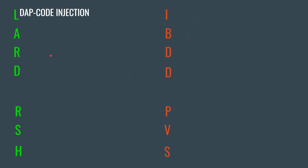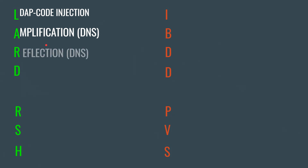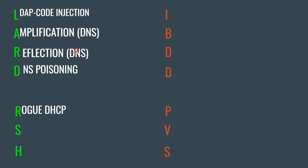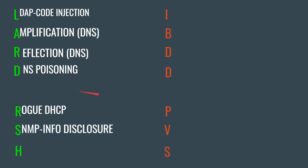For L, we have LDAP — the Layer 7 technology — and the threat is code injection. For A (DNS), the threat is amplification. For R (DNS), the threat is reflection attack and DNS poisoning. For D (DHCP), the threat is rogue DHCP. We rearrange the order slightly to make the mnemonic work.